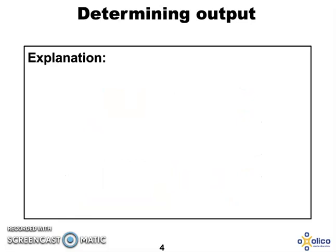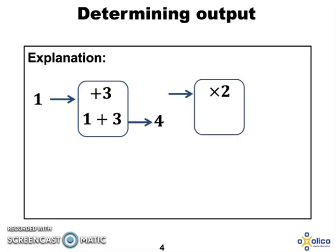If you needed an explanation, I'll go through one of the questions given. So the operator was plus 3, and put the number 1 in. 1 plus 3 is 4. Let's put the 4 into the next operator, which was times 2. 4 times 2 is 8.